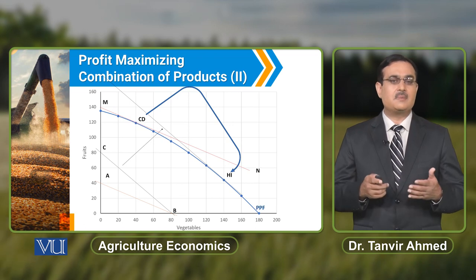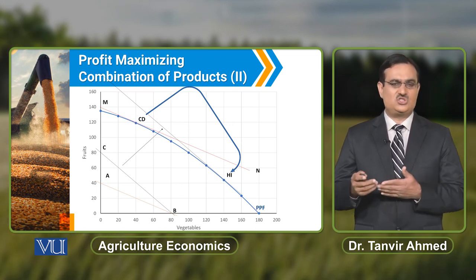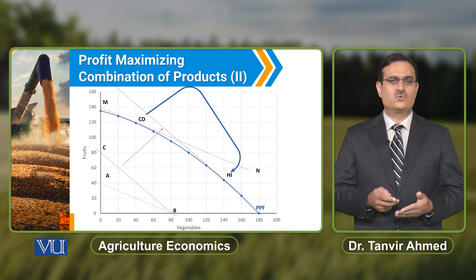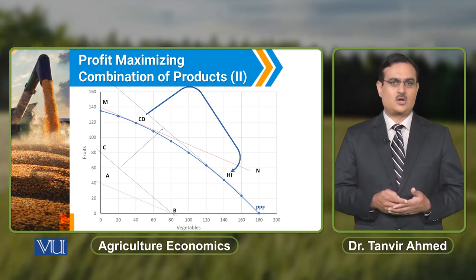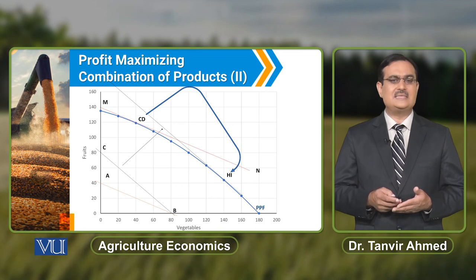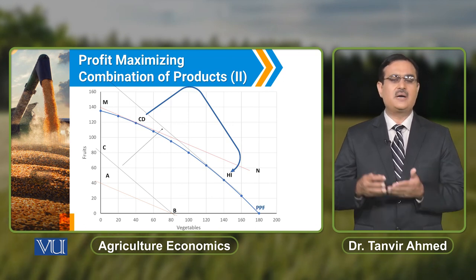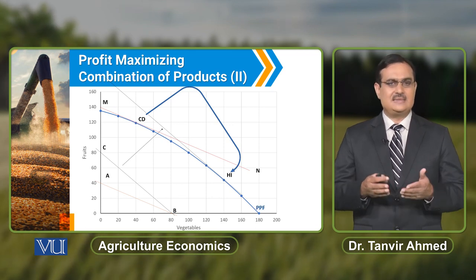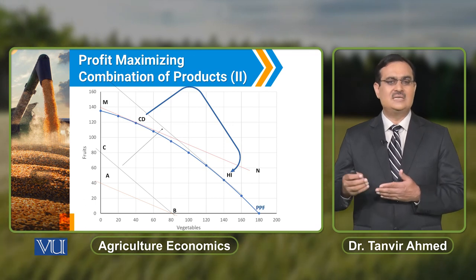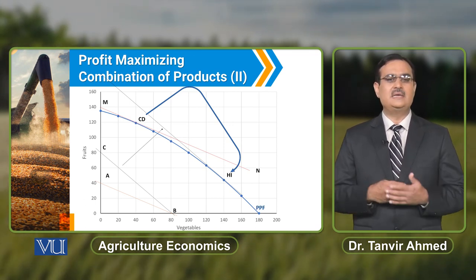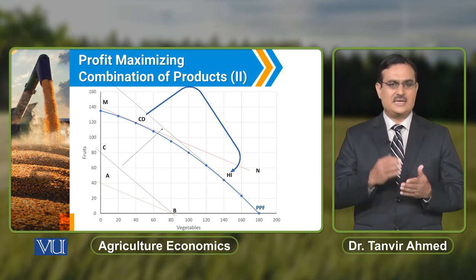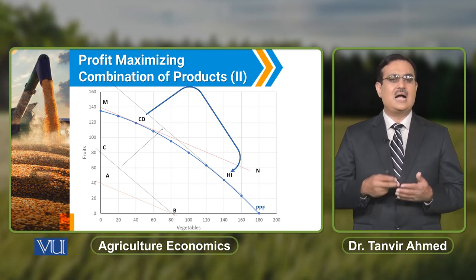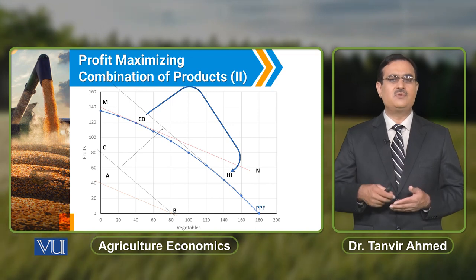If we assume that there is a change in the price of fruits and the price of fruits decreases, then to get the same amount of revenue the farmer has to sell double the quantity of fruits. This is the ISO revenue curve when the price of fruits decreases by 50%. This curve will become steeper, and to find the profit-maximizing combination, we have to shift this ISO revenue curve outward.